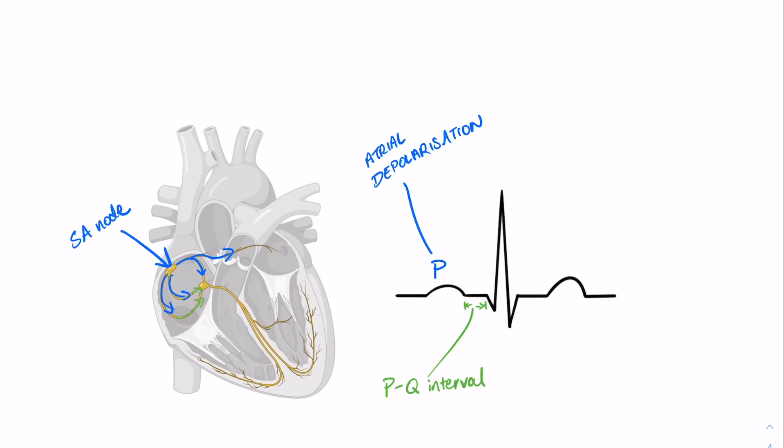Okay then after that you can see that there's a slight delay between the P wave and the QRS complex indicated there in green by the PQ interval and that there is representative of that delay caused by the AV node. Remember giving that time for the blood to travel between the atria and the ventricles.